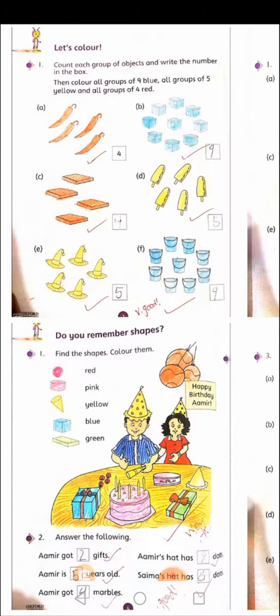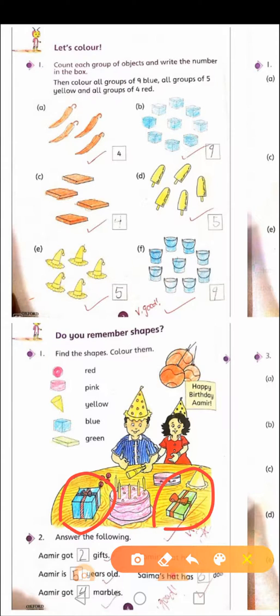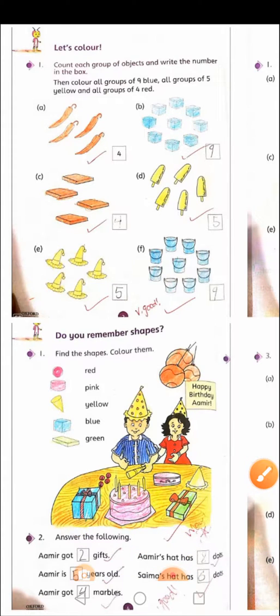Amir got __ gifts. How many gifts has Amir got? He has got two gifts. Children will write the numbers in the boxes according to the questions. Amir is __ years old. How will you know how many years old Amir is? By counting...